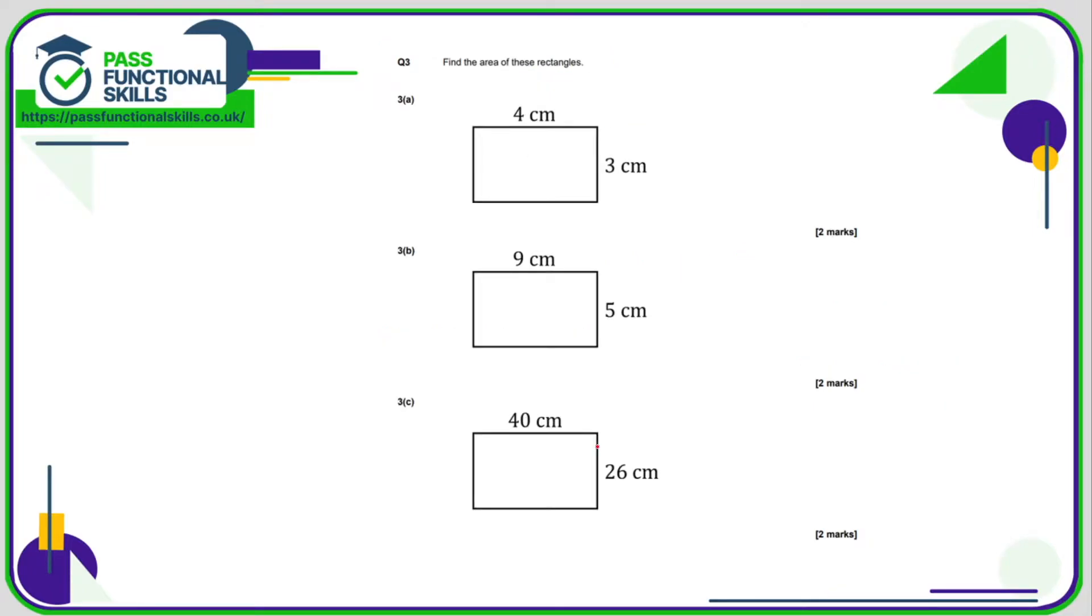Question number three, it's a calculator question, but you probably don't need it for some of the easy ones. So the area is 4 times 3, 12 centimeters squared. 5 times 9, 45 centimeters squared. You'll probably need it for C, though. 40 times by 26, which is 1,040 centimeters squared.